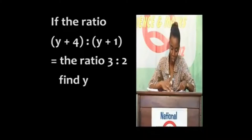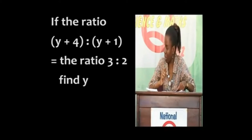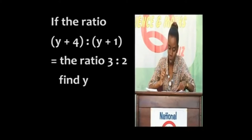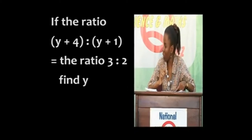If the ratio Y plus 4 is to Y plus 1 is equal to the ratio 3 is to 2, please find Y. Yes, Nicholas. Y is 5. That's right.